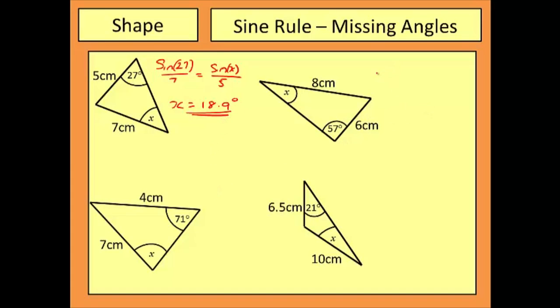This example over here. When I set up my sine rule, I'm going to have sine 57 over 8 equals sine of the unknown angle X over 6. When I multiply both sides by 6 and take the inverse sine, it will give me a value for the missing angle of X as 39.0 degrees.